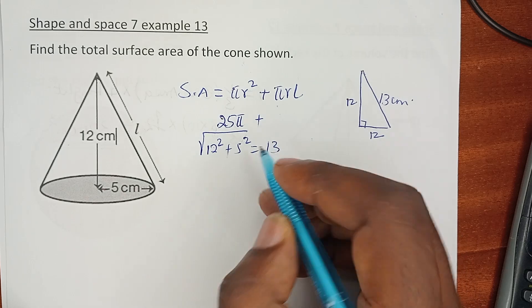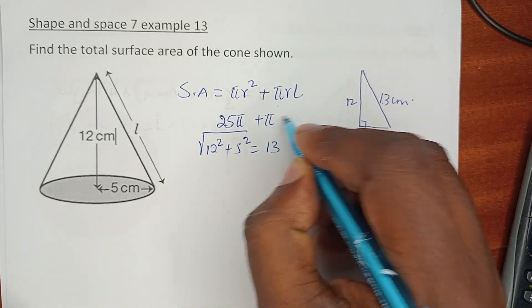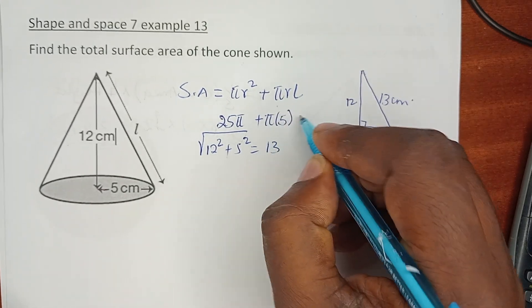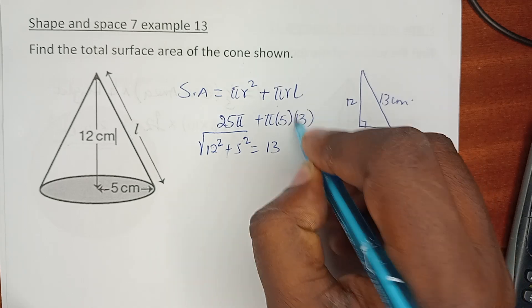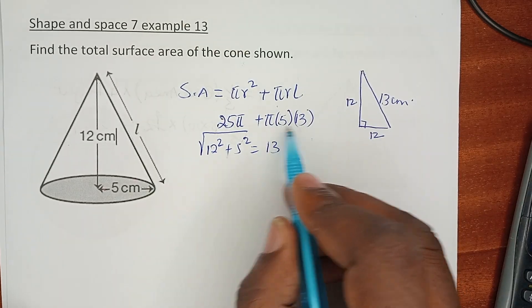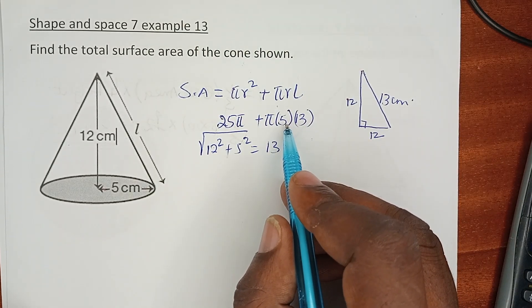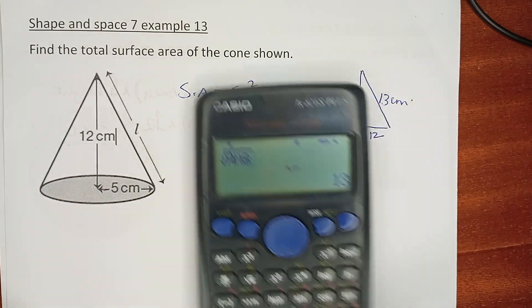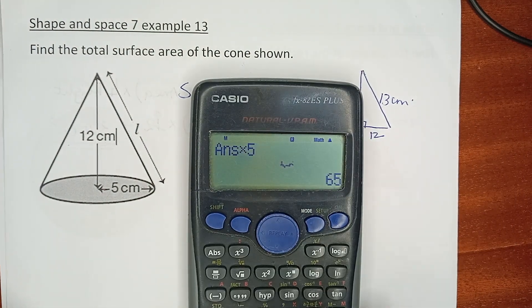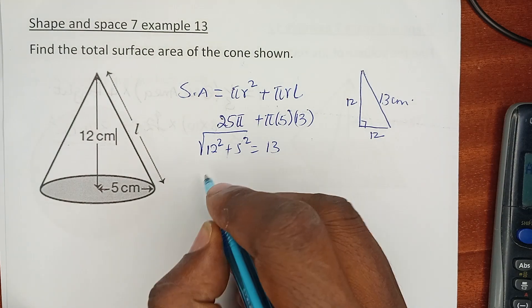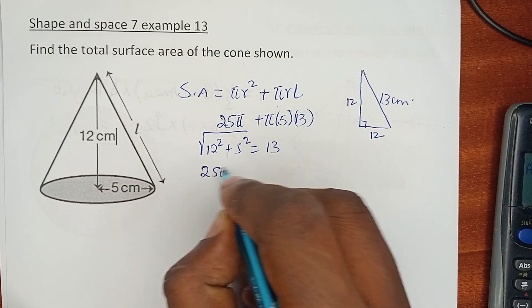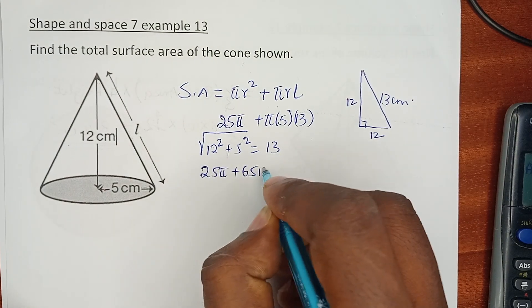So πrL is actually π times r which is 5 times 13. You can see this is 13 times 5 which is 65π. So we have 25π + 65π which is 90π.